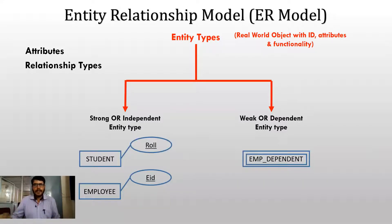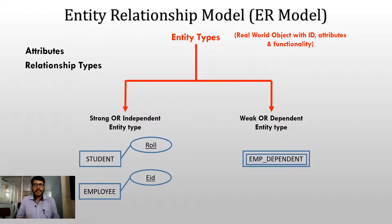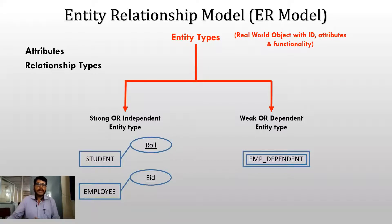To summarize: entity types are of two types — strong entity and weak entity. A strong entity is one which has a primary key attribute. A weak entity type is one which does not have any primary key attribute. This is what entity types are.